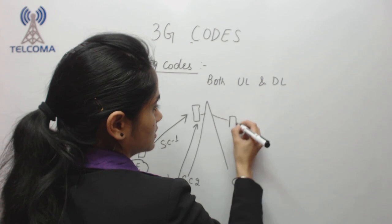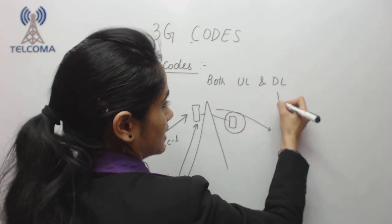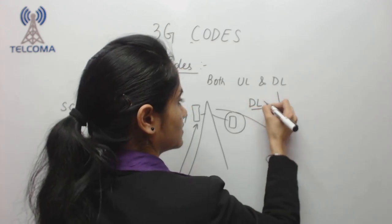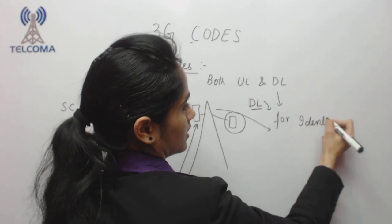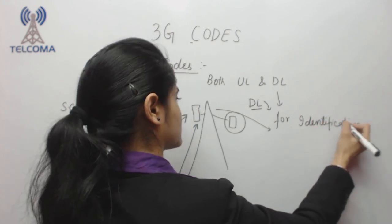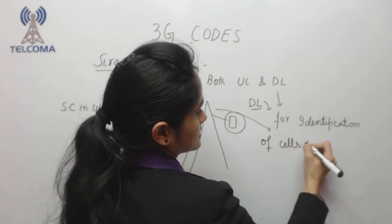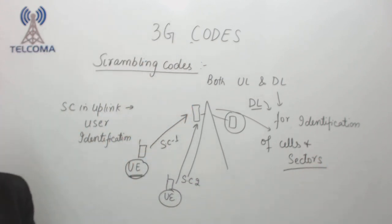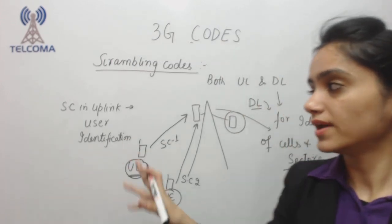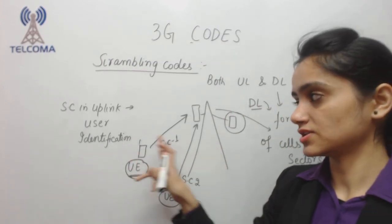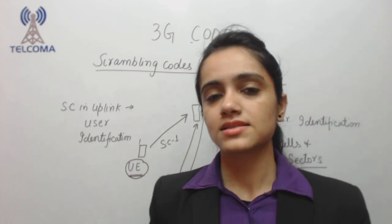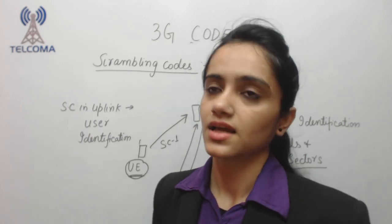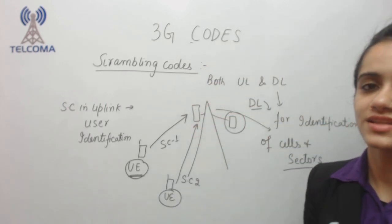In the downlink direction, scrambling codes are used for identification of cells and sectors. So scrambling codes in downlink are used for sector identification, whereas scrambling codes in uplink are used for user identification, and channelization codes are used to separate out and identify the various physical channels. These are the 3G codes. Thank you so much.